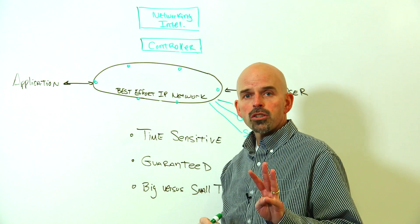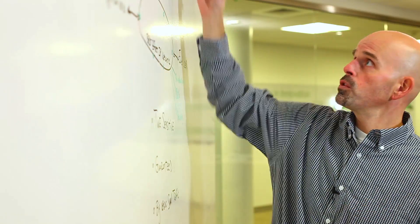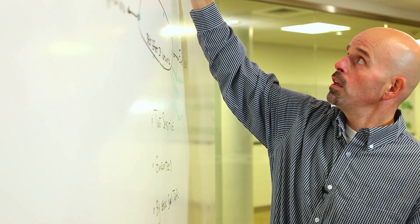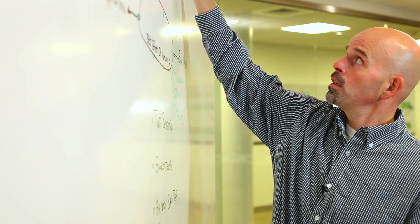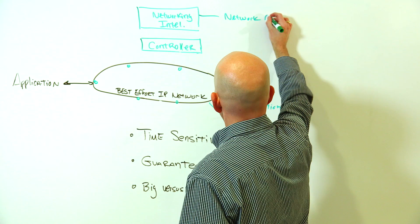That network intelligence is composed of three main parts, three main pieces. First, network awareness. Knowledge of what the network is doing at any given time.